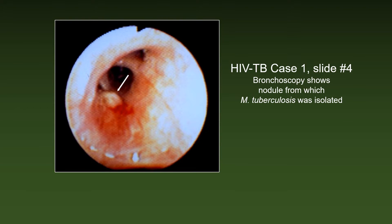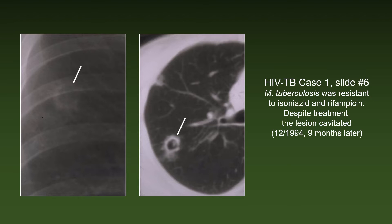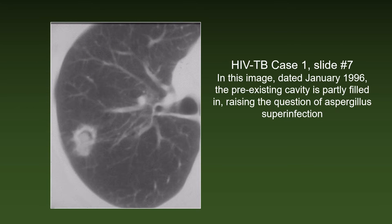Bronchoscopy showed a nodule from which MTB was isolated. Unfortunately, MTB was resistant to isoniazid and rifampicin. Despite treatment, the lesion cavitated — see the CT scan on the right. In this image, dated 20 months after the diagnosis of TB, the pre-existing cavity is partly filled in, raising the question of aspergillus super-infection.